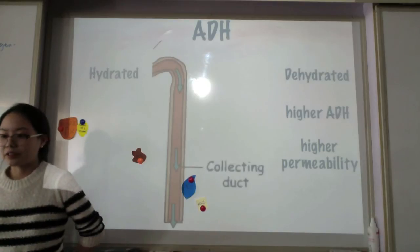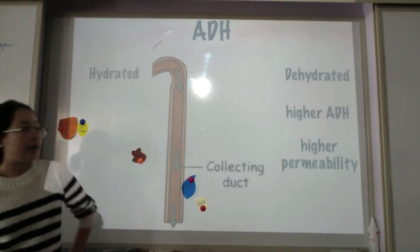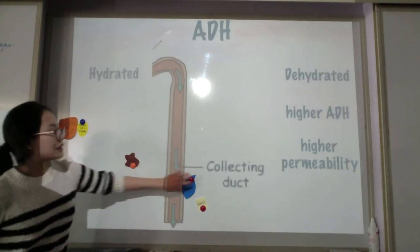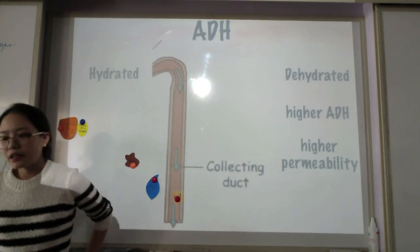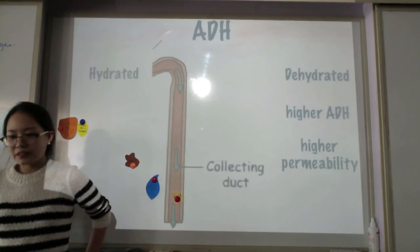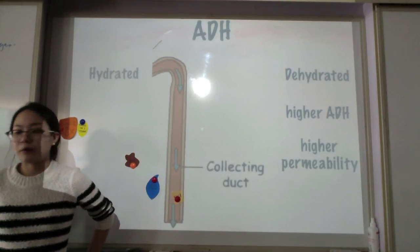And if one's dehydrated then they'll send higher ADH from the pituitary gland, posterior pituitary gland. And this is a negative feedback mechanism.